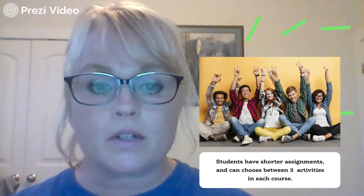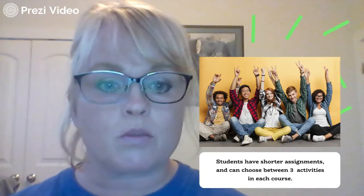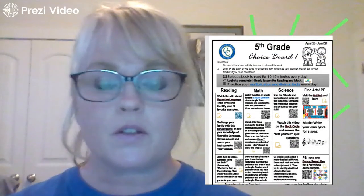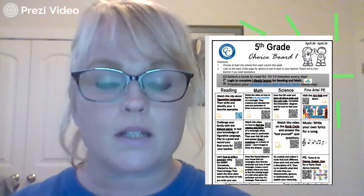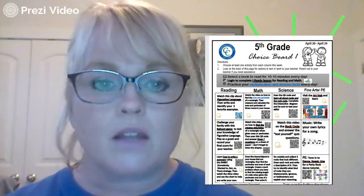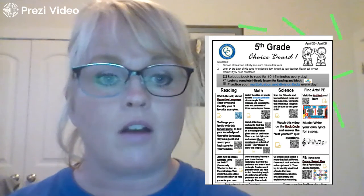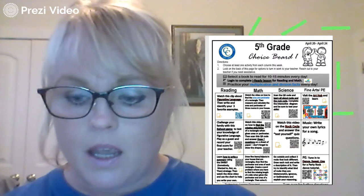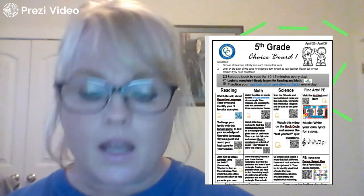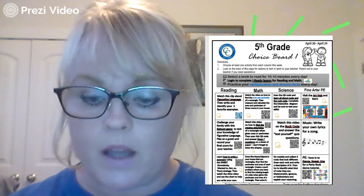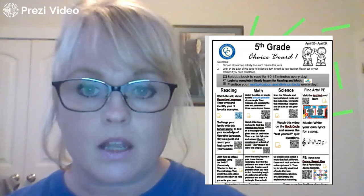Students have shorter assignments and can choose between three activities in each course. This is going to be happening beginning April 20th through April 24th. Here's what a choice board looks like — you can see there are three columns: a reading column, a math column, a science column, and a fine arts and PE column. The directions say you are to choose at least one activity from each column this week.